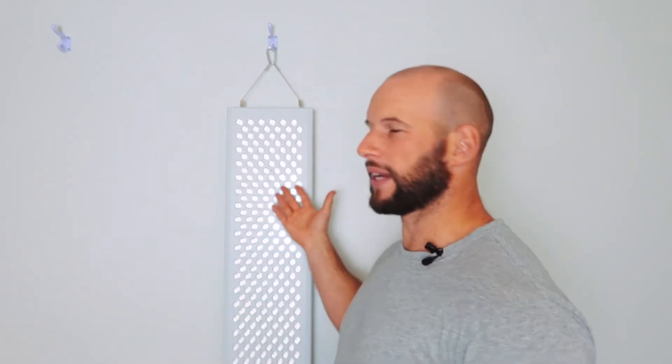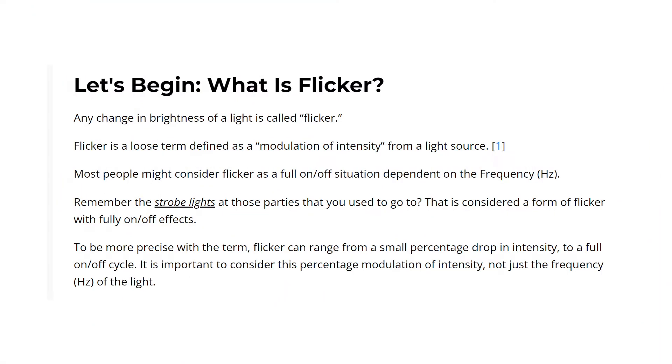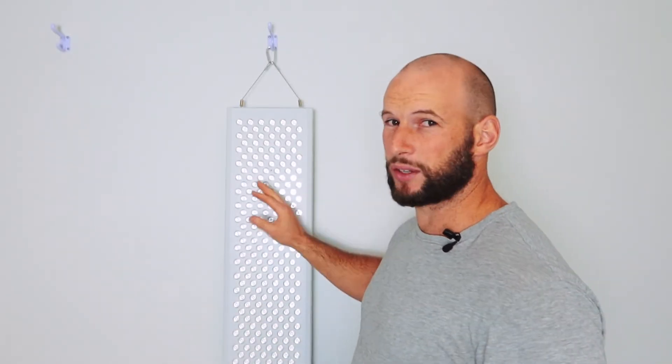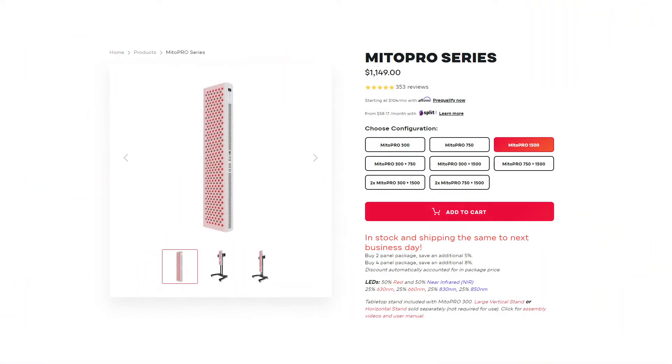I'll still be doing my reviews, my news, and all that other content. So first things first — what is flicker? It is effectively the change in brightness from a light. If we have an LED light, like the Mito Red Mito Pro 1500 here behind us, if there was flicker, the LED would be bright and then drop off — either completely, or more often only a little bit, maybe 20% of the overall brightness. I should mention this panel has no flicker — just putting that out there.